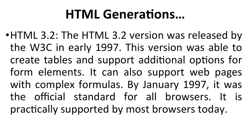HTML 3.2 was released by the W3C Consortium in early 1997. This version could create tables and support additional options for form elements. It also supported web pages with complex formulas. By January 1997, it was the official standard for all browsers and is still supported by most browsers today.